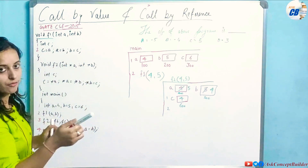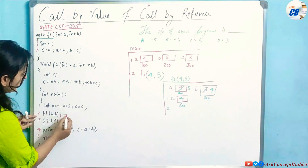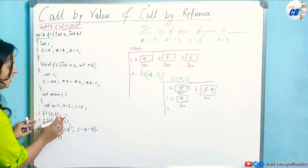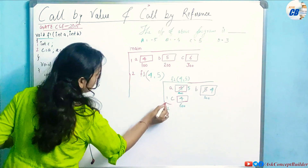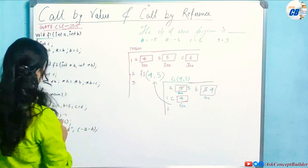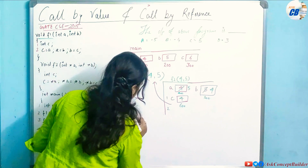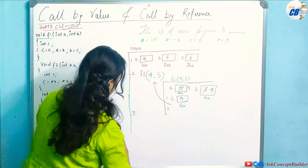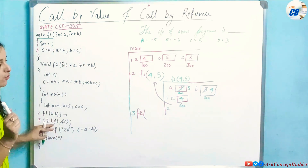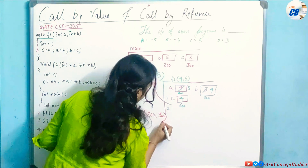f1 function execution is completed. We return to the point from where it was called in main — the second statement is done. Now the third statement executes: calling f2. The addresses of b and c are passed to f2. Address of b is 200 and address of c is 300, so f2 is called with these addresses.